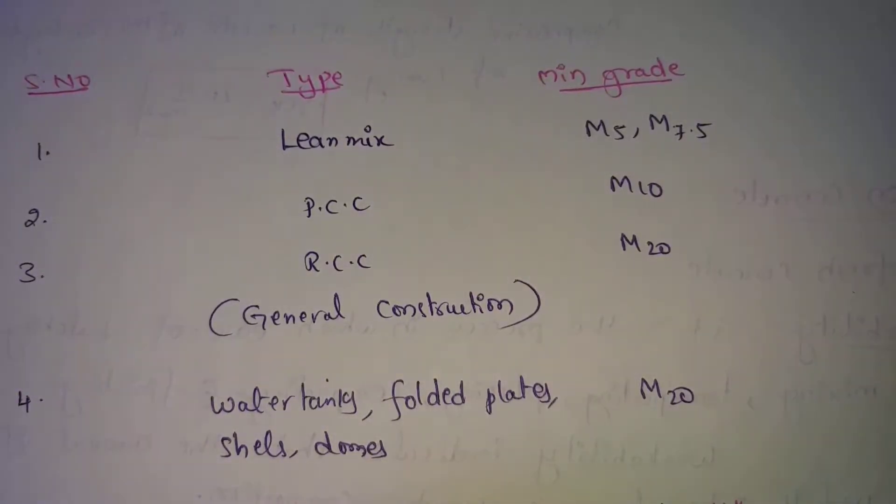Different construction types. First is lean mix. Lean mix with M5, M7.5. This is used for footing and bed. It is very cheap mix, so strength is very low. M5 and M7.5 have very low strength.